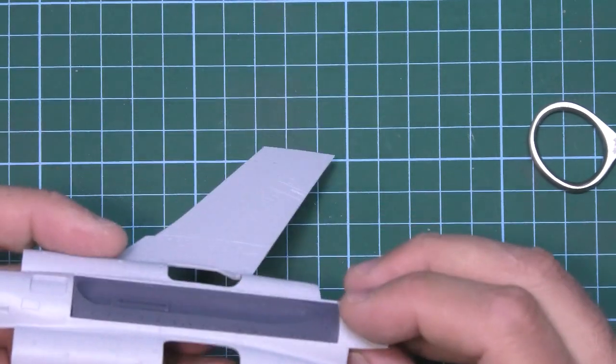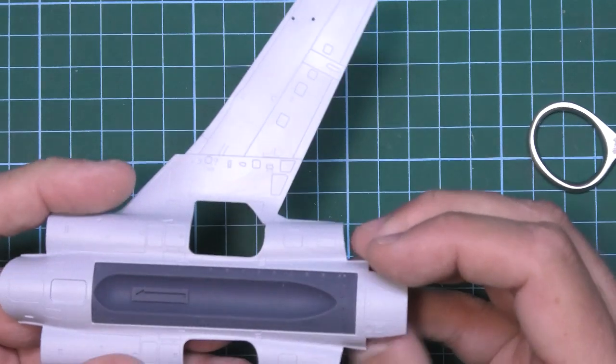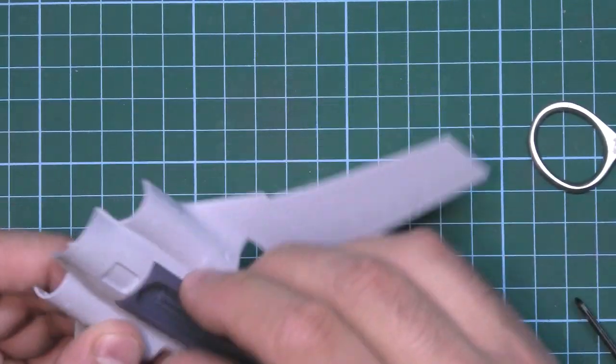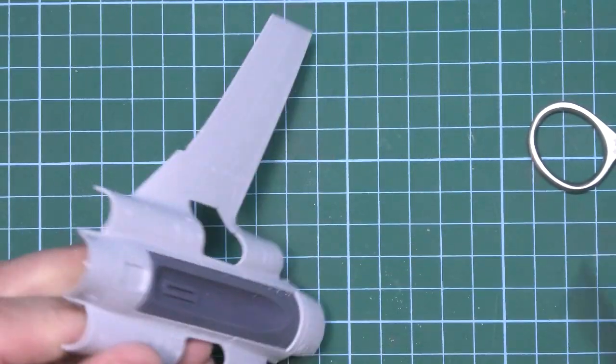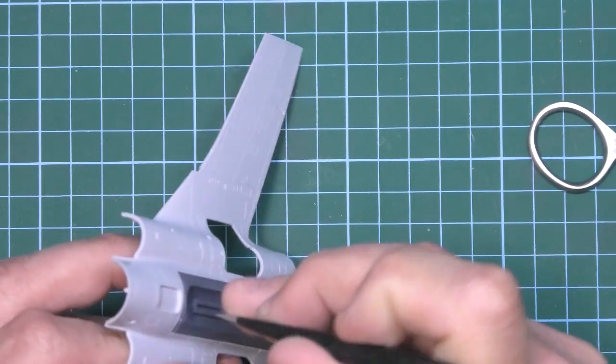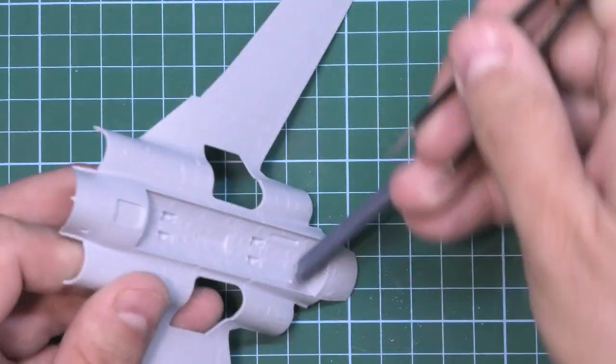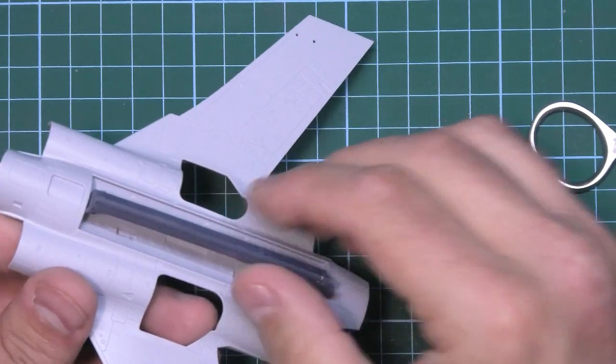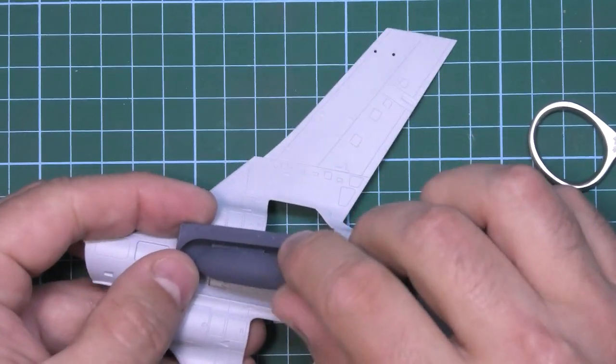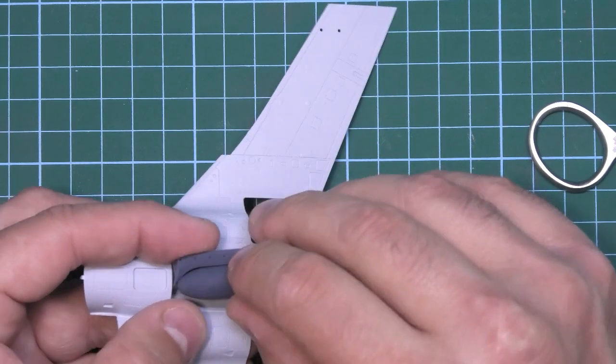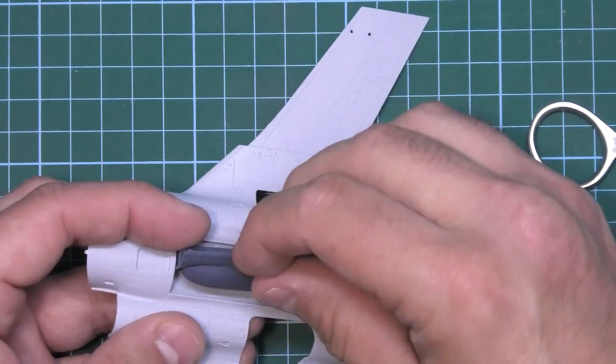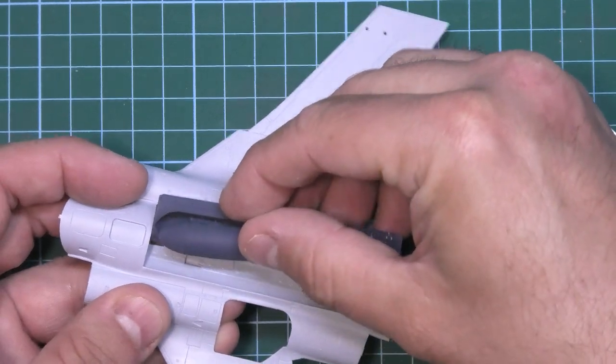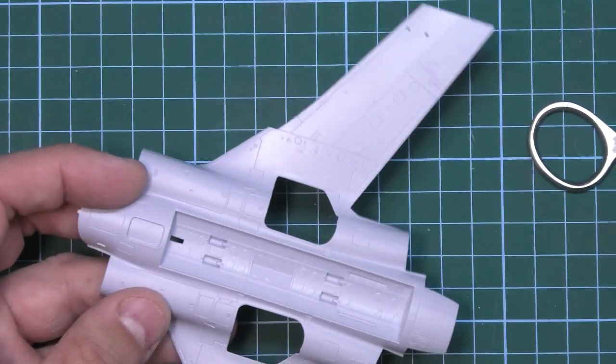Although, having said that, you're not looking for a perfectly seamless fit here because that's a rotating bomb bay on the real thing. On the real thing, that would rotate away, like so, and would rotate out with the bomb in place.